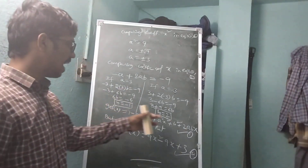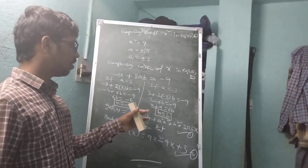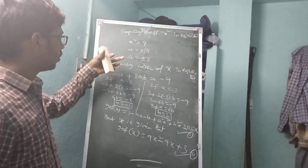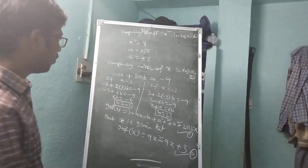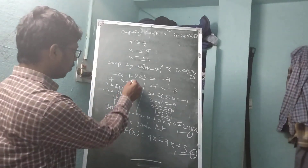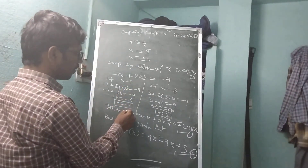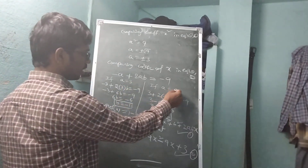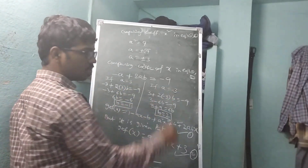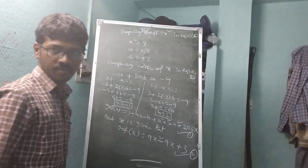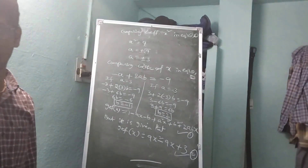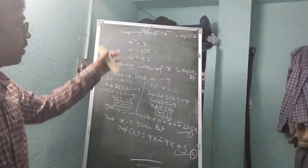So the b values are: when a equals 3, b equals minus 1; and when a equals minus 3, b equals 2. This is the composition of functions problem solved.